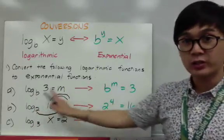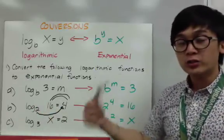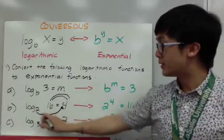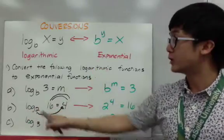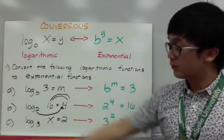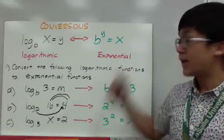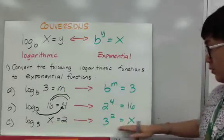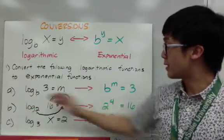For me, it's like a circle — that's one technique you can apply to convert in your head. Whenever I see logarithm of 16 base 2 equal to 4, I know it's 2 raised to 4 equal to 16. For letter c, I have logarithm of x base 3 equal to 2. I can convert it into exponential by looking at the base: 3 raised to 2 is equal to x. And that's how we convert logarithm to exponential.